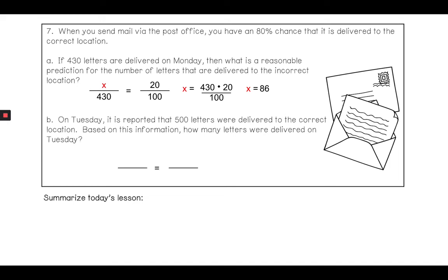On Tuesday, it's reported that 500 letters were delivered to the correct locations. Based on this information, how many letters were delivered on Tuesday? That's a different setup. In our cross product, 500 is not a total—that's just the correct. So that's going to go on the top, the numerator. We'd have 100, and that 500 is how many correctly were delivered, so I would have 80% on top. Then x would be the denominator of that first one. I set up my cross product: 500 times 100 divided by 80. When I multiply that through, I get 625. So on Tuesday, 625 letters were delivered. Hopefully this was helpful for you guys. Let me know if you have any questions. Have a great day and stay safe.